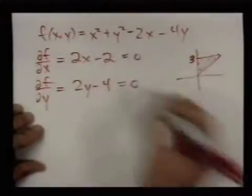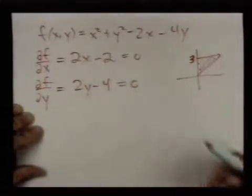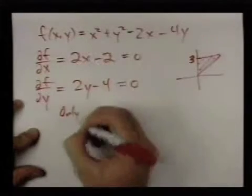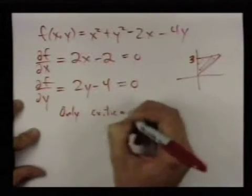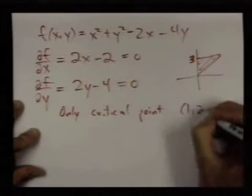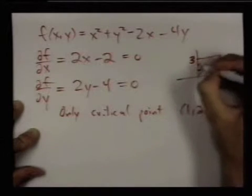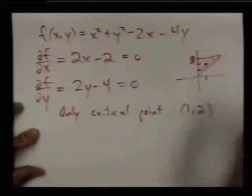These are both 0 when x is 1 and y is 2. So, the only critical point is 1 comma 2. It occurs inside the region. That's good to know.